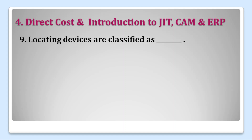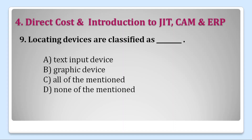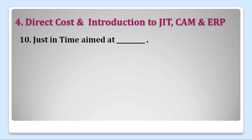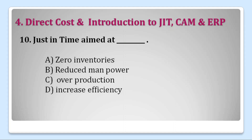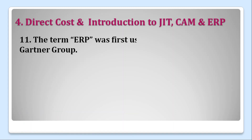Question nine: locating devices are classified as — options are: A. text input device, B. graphic device, C. all of the above, or D. none of these. Locating devices used in CAM are classified as graphic devices. Right answer is B. Question ten: Just in Time aimed at — A. zero inventories, B. reduce manpower, C. over production, or D. increase efficiency. JIT aims at zero inventories. Right answer is A.